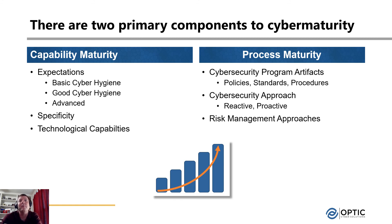From the process side, at lower maturity we might rely on word of mouth as our program artifacts, while at higher maturity we have formal policies, standards, and procedures defining how cybersecurity capabilities are implemented and what the requirements are. Another shift as process maturity increases is moving from reactive to proactive security — for example, a security camera monitoring a door is reactive (we know someone entered after the fact), whereas a physical guard preventing entry is proactive. In some cases we may need both. Process maturity helps us have the right conversation about what's appropriate given the risks we face.